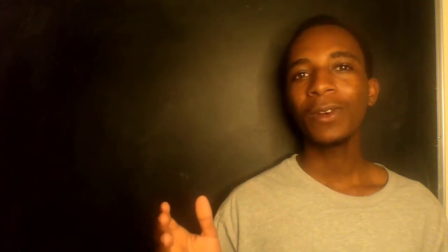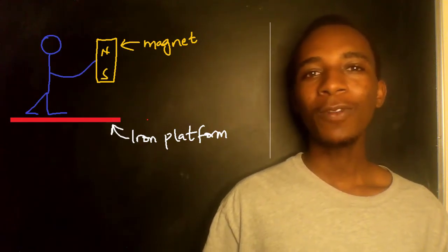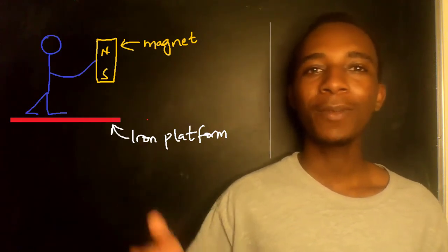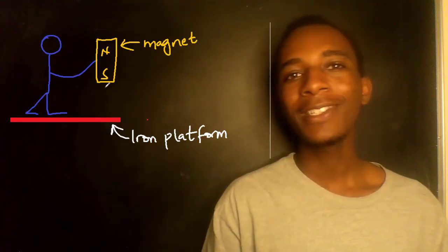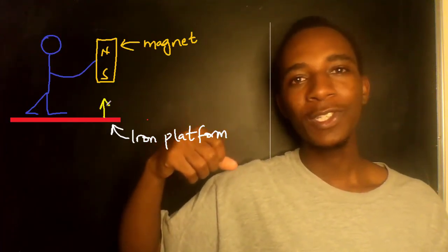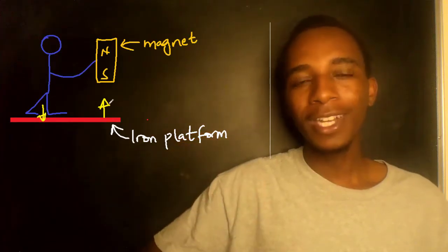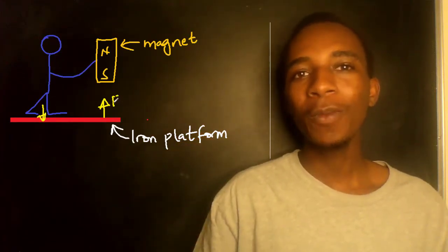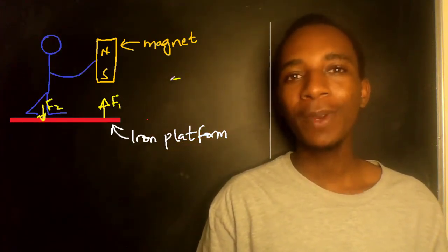So let's look at the third law of Newton. We know that action and reaction are equal but opposite. If you look at the example of standing on an iron platform and holding a magnet in your hands, this magnet is actually attracting the iron plate. That's true but your feet are actually exerting an equal but opposite force on the iron plate.